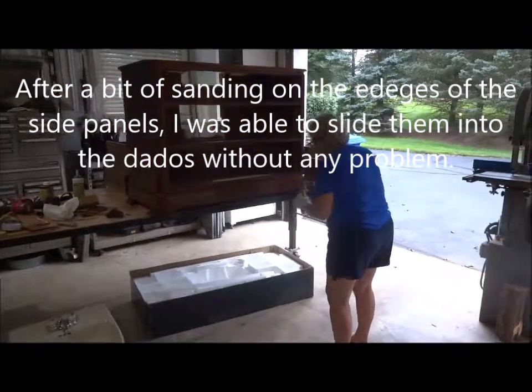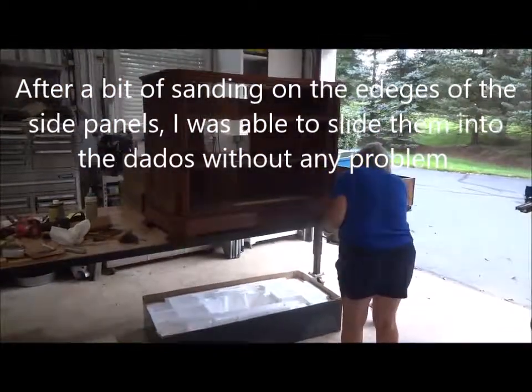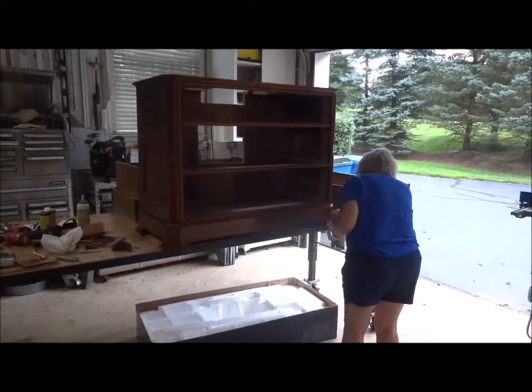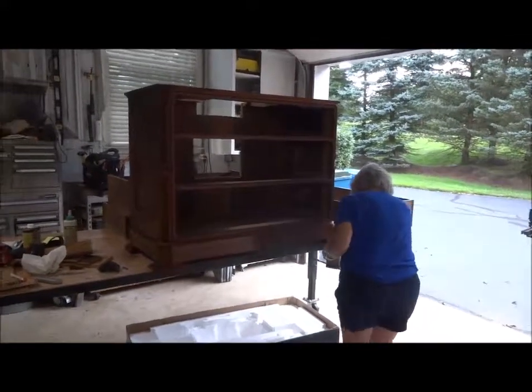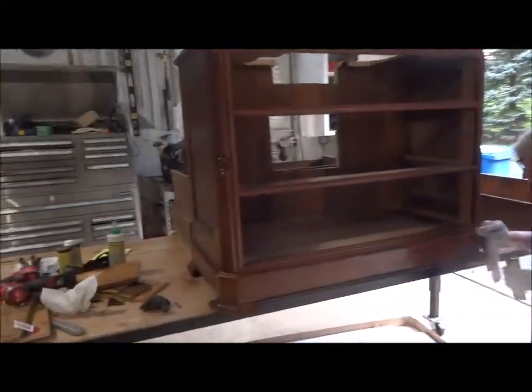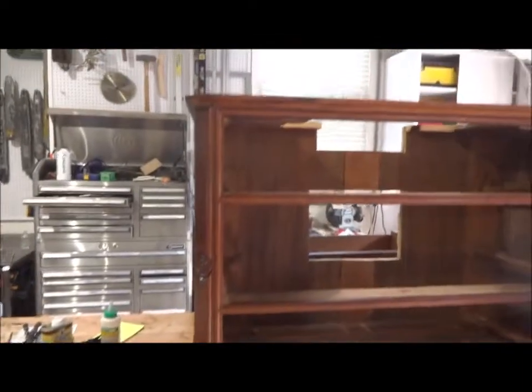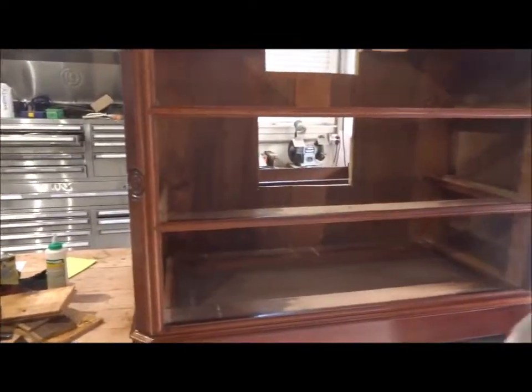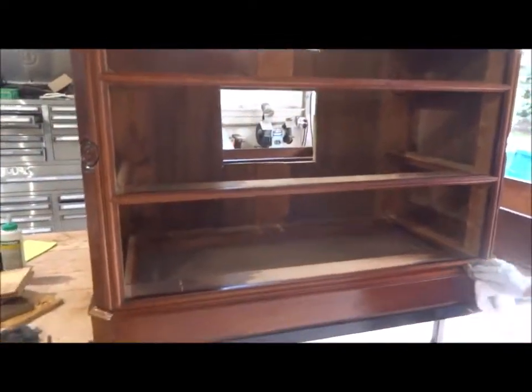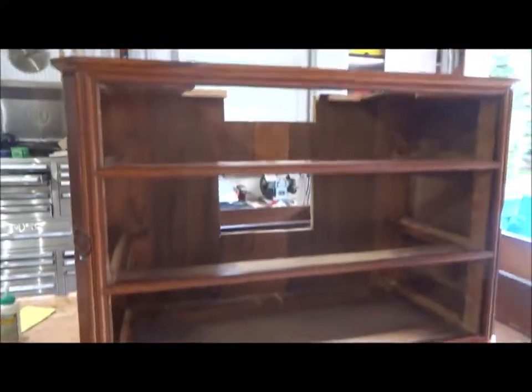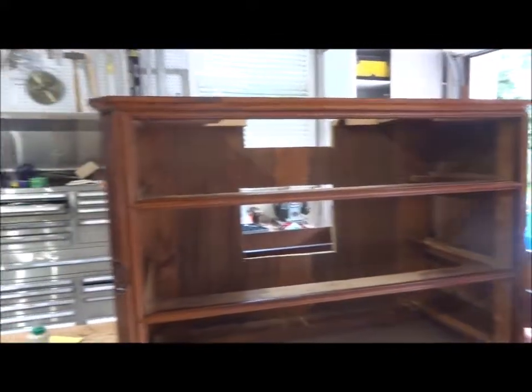My able-bodied assistant here is putting a coat of Howard's Restora finish. It works pretty good on stuff like this - it's actually looking pretty good, brings out some of the color. There's some holes for the plumbing cut in the back and we're getting just about ready to put that bad boy in place.